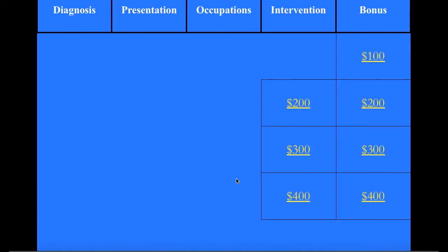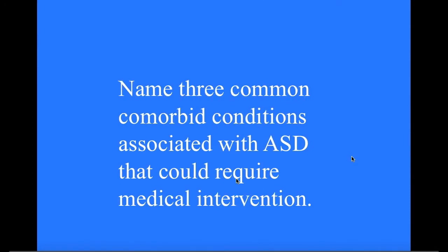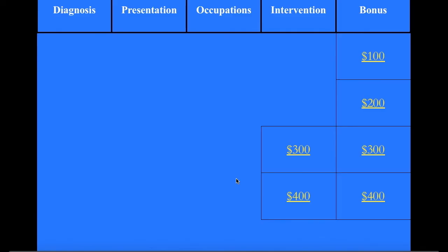Interventions for 200: Name three common comorbid conditions associated with ASD that could require medical intervention. What are ADD, ADHD, and depression? Correct — even though there are no medications shown to improve hallmark symptoms of ASD, there are medications available to treat comorbid conditions and irritability, such as SSRIs, Risperidone, and methylphenidate.